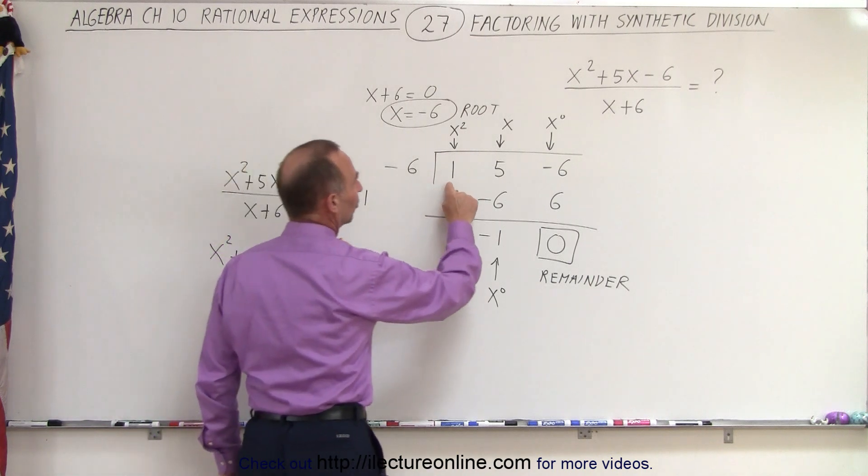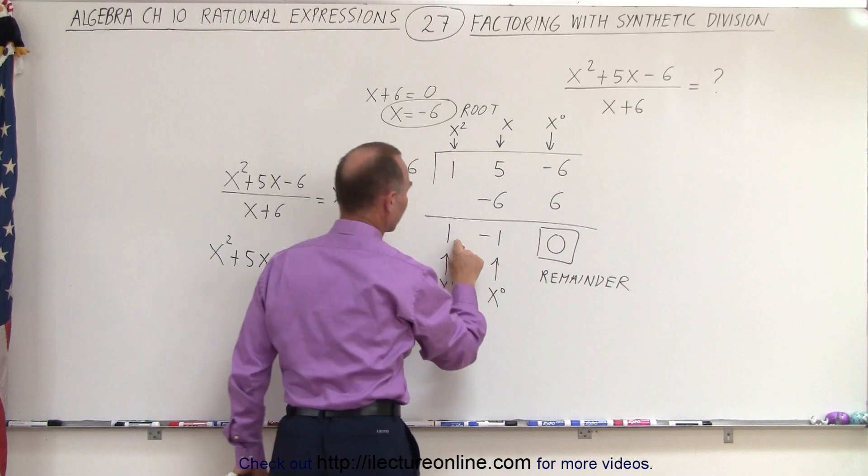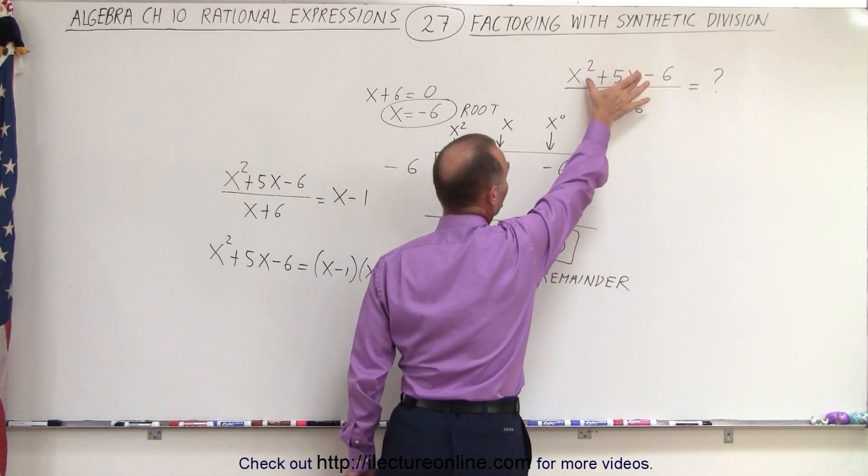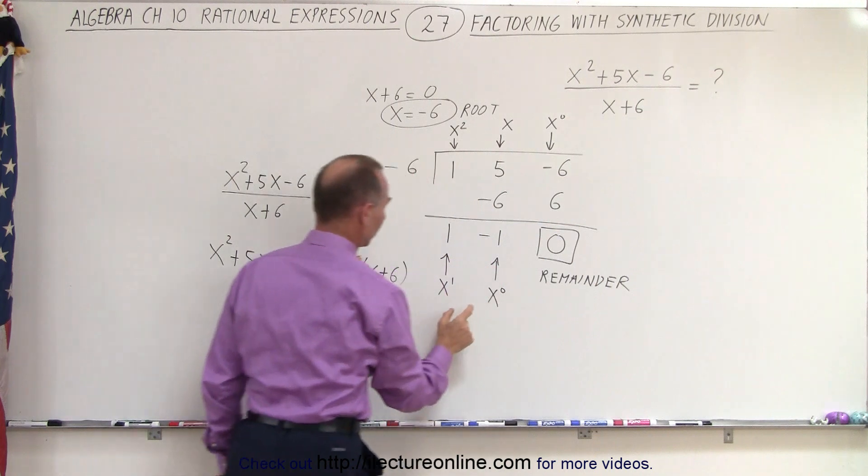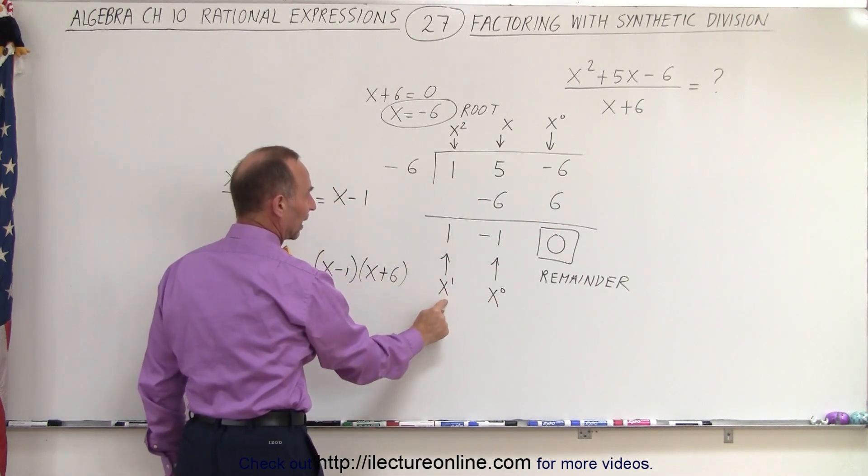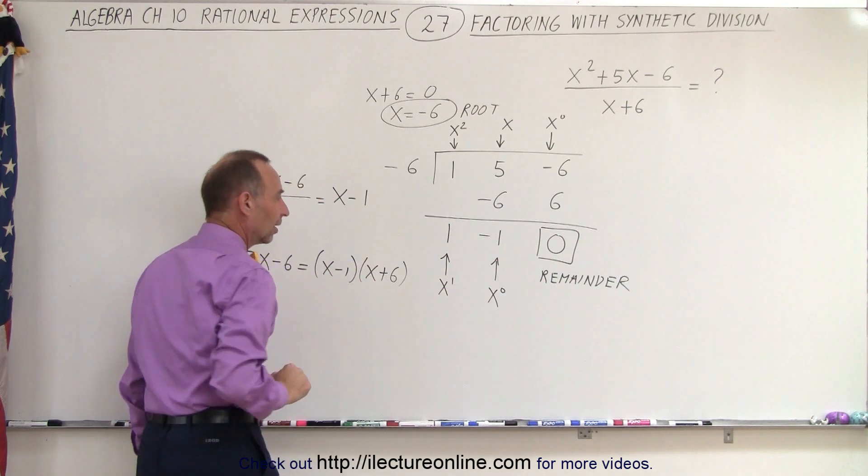Again, notice that these are simply the numerical coefficients of the polynomial at the top and these here are the numerical coefficients of the solution. When we divide this by this, we get the solution. And so this represents the x minus 1. So 1 for the x to the first term and minus 1 for the x to the zero term, which is simply the constant.